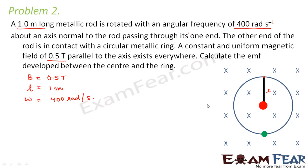For solving any problem, first think whether an EMF will get induced or not. In this case, the magnetic field is not changing, and there is no change in relative orientation between the magnetic field and the area. So the only thing that is changing is the area. If we take any point on the rod — represented by the green point — we need to calculate the induced EMF between these two points.